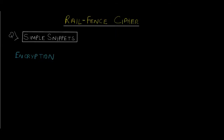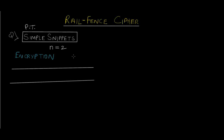As you can see on the screen, the plain text is 'simple snippets' and we're going to encrypt it using the rail fence cipher technique. We have the concept of rails — let's say we have two rails, so imagine two parallel lines. We need to mark places equal to the number of characters in our plain text. 'Simple snippets' has 14 characters, so I'll mark 14 points on the fence: one through fourteen.